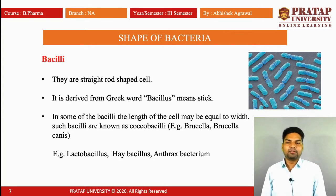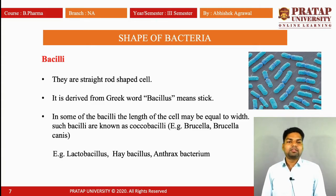Second is bacilli. They are straight, rod-shaped cells. The name is derived from the Greek word 'bacillus' meaning stick. In some bacilli, the length of the cell may be equal to the width; such bacilli are known as coccobacilli. Examples include Brucella and Brucella canis. Other examples of bacilli are Lactobacillus, which is found in milk and curd, hay bacillus, and the anthrax bacterium, which causes anthrax disease.